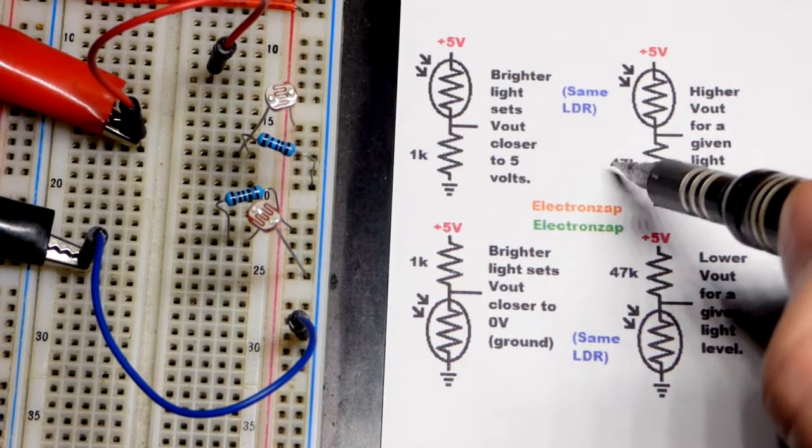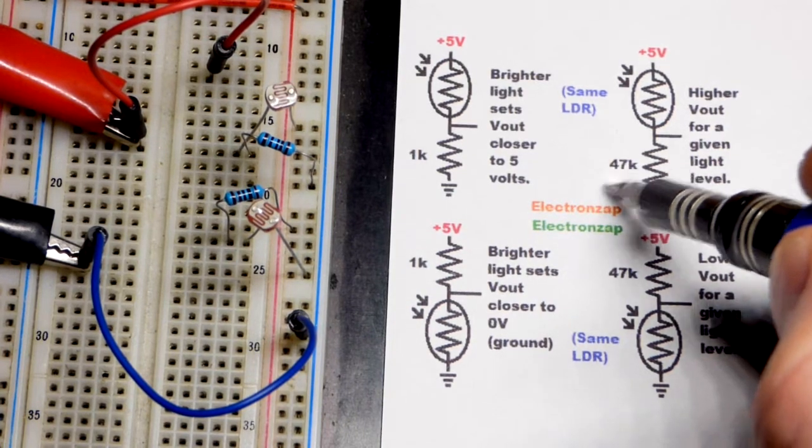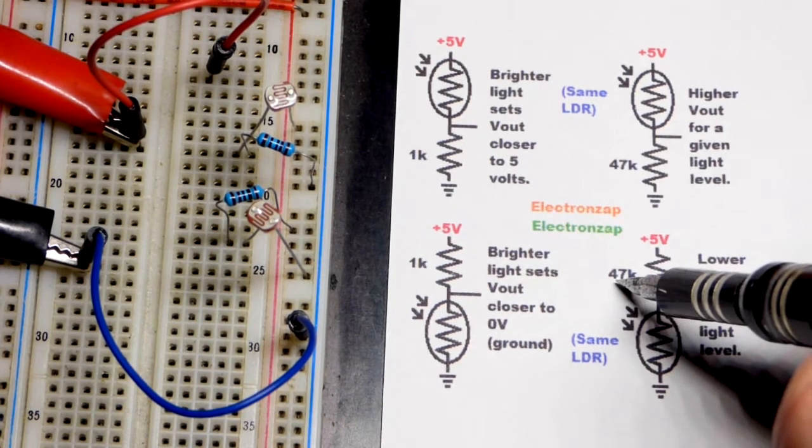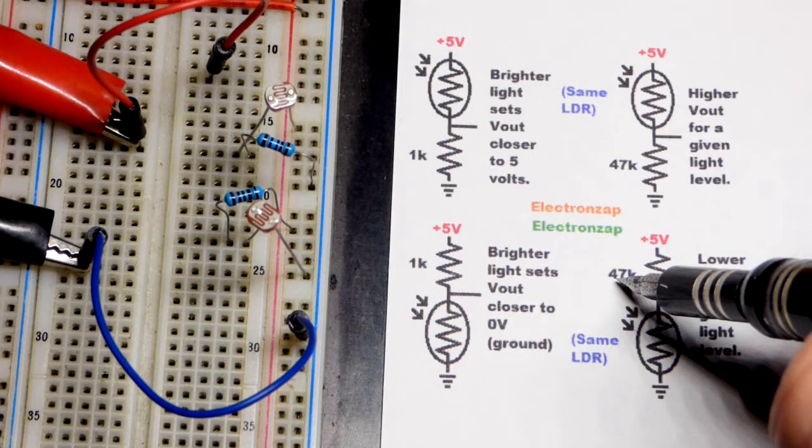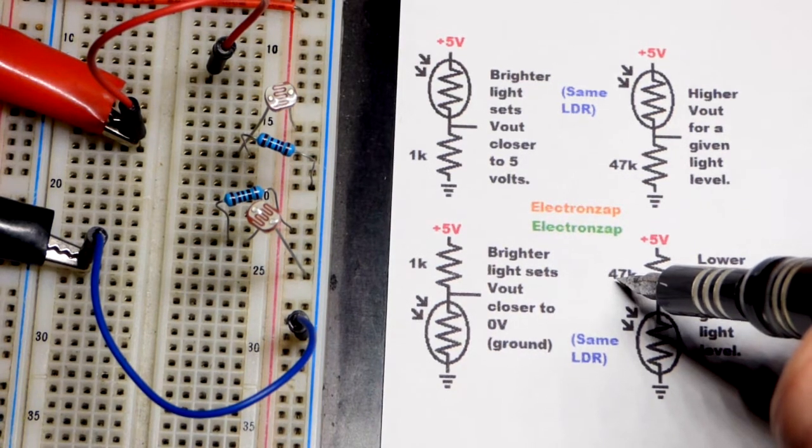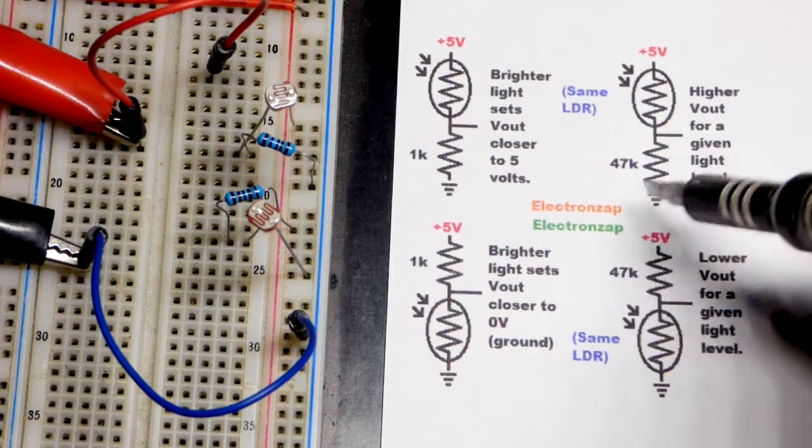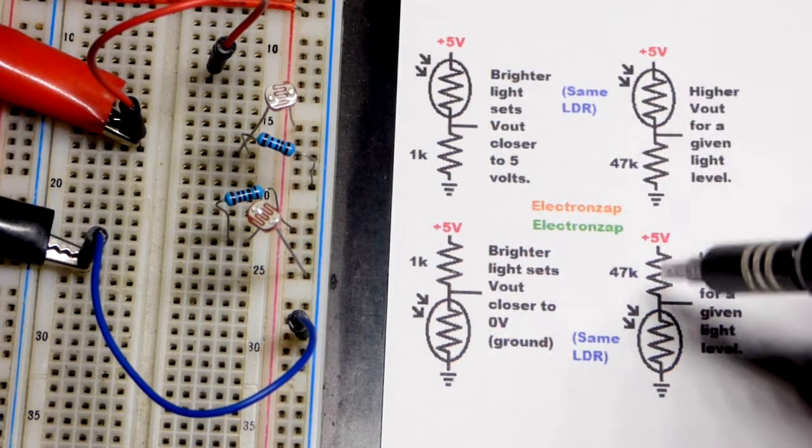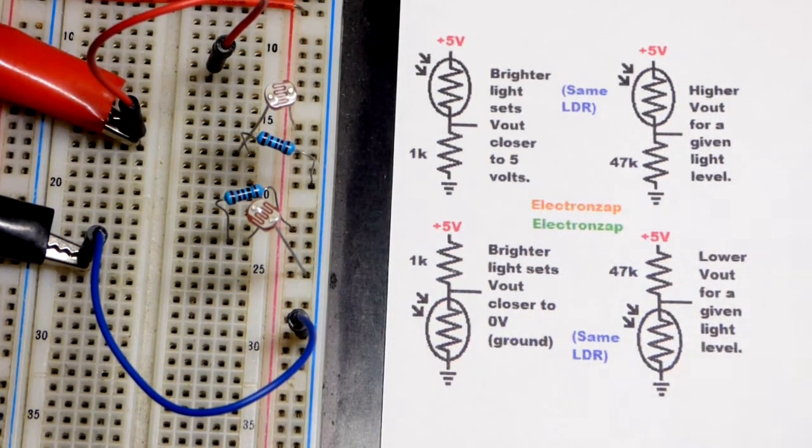So I find with this light level, 47,000 ohms is a somewhat common value. You're most likely to have it than other ones close to this. So that's the value I used. But we will see with this light level, we can get to the supply voltage pretty nicely.